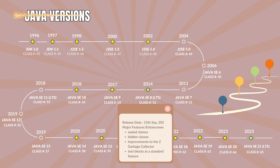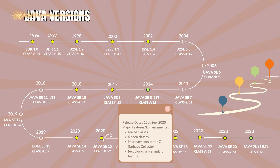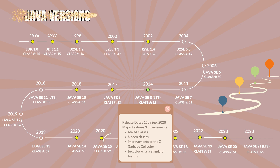Java 15.0 with the class file version 59. It was released on 15th September 2020. The major features and enhancements are sealed classes, hidden classes and interfaces as a preview feature, pattern matching for records as a preview feature, improvements to the Z Garbage Collector, and text blocks as a standard feature.